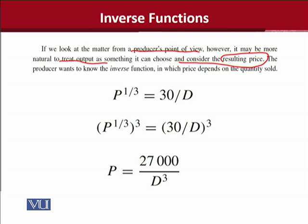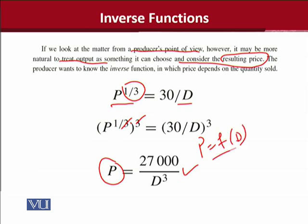How can it be done? With the same function, it's very easy to see. From the previous function, there is cross multiplication, and as a result, p is shifted to the left-hand side and d is shifted to the right-hand side. In order to get rid of the root — because we are looking for the value of the variable itself, not any power or root of it — by taking the cube on both sides, we have achieved that. So p is actually equal to this value. Now we can see that p is a function of d. It is reversed. This is known as the inverse demand function, whereas the first function we started with was the demand function.